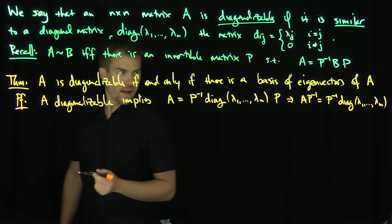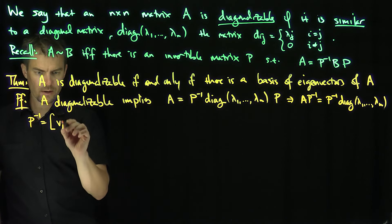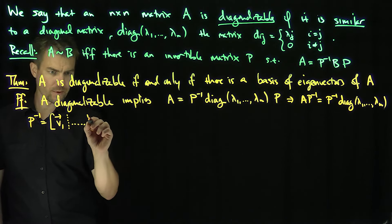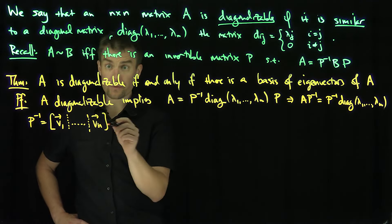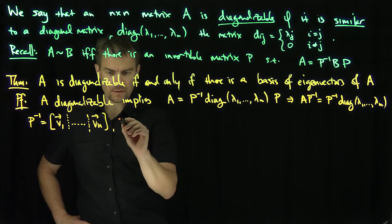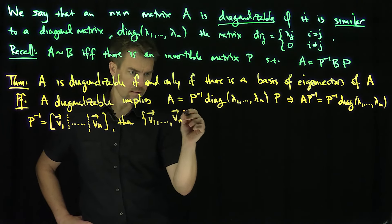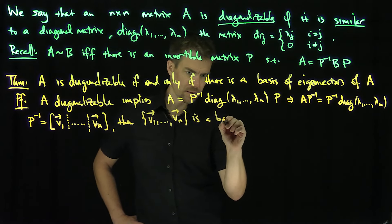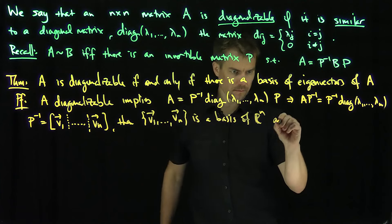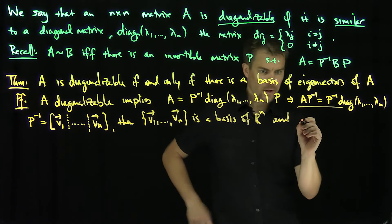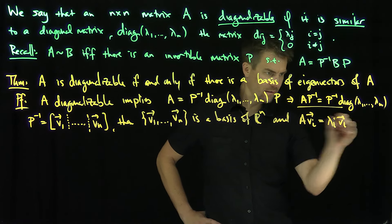And that says that this matrix P⁻¹, if P⁻¹ is the matrix v₁ in the first column all the way down to vₙ, then those vectors form a basis of n-dimensional space, a basis of ℝⁿ. And according to this,